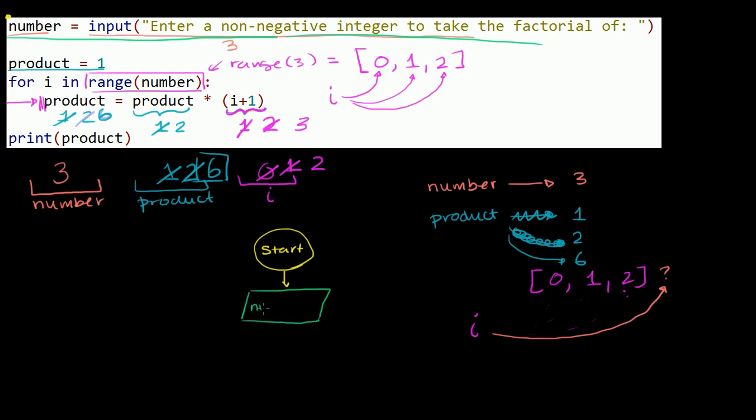And we'll just say number equals user input. And you can be a little bit loosey-goosey with the terminology here. You're really just trying to say what you're doing at this step. The parallelogram tells us that we are somehow interfacing with the user. We're either taking something from the user or we're outputting something to the user. So here we're saying user input is equal to number.